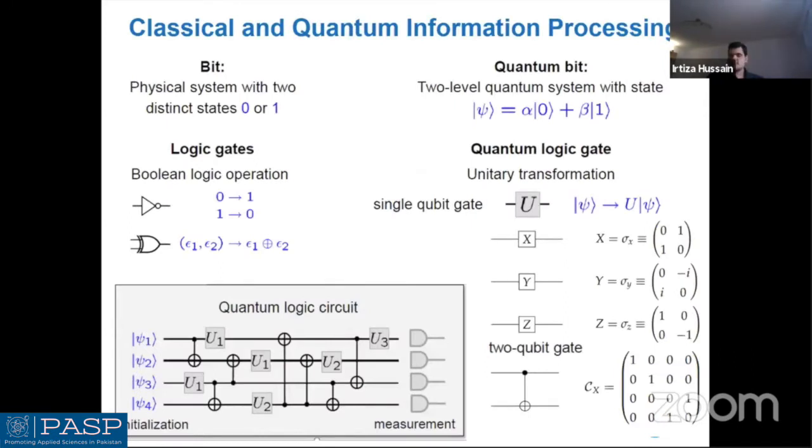Just a brief introduction between the difference between classical quantum information processing. In classical world, we have a fixed binding logic in terms of 0 or 1 and you have heard already about these boolean logic operations. But in quantum information processing, the main difference is we have a linear superposition of these two binding states and we can describe mathematically all these single two-qubit gates in terms of unitary transformation. This is the control NOT gate and here you can see how a quantum logic circuit looks like. We prepare our quantum system in some initial state and then we do a whole bunch of operations and finally we do some measurements to see the outcome.